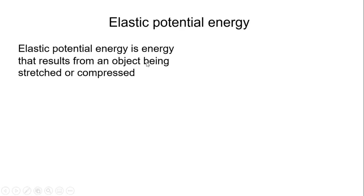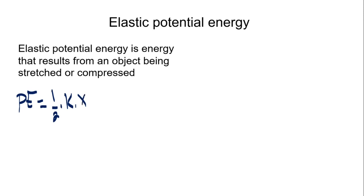Elastic potential energy is the energy that results from an object being stretched or compressed, and is given by one half K times X squared, where K is the elastic constant and X is the stretch or compression.